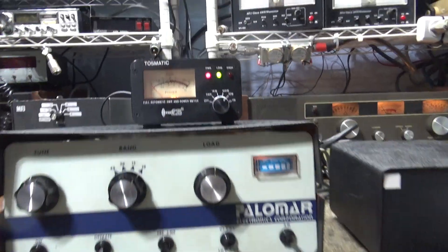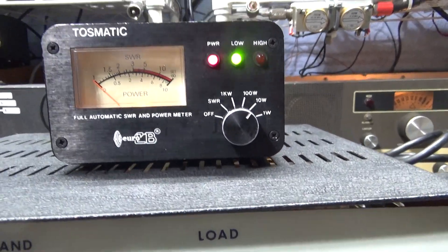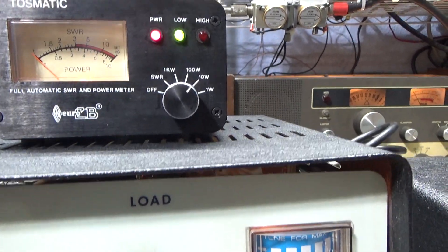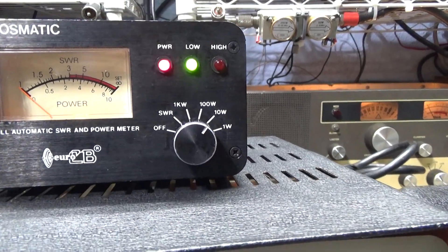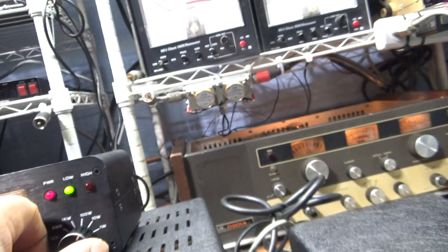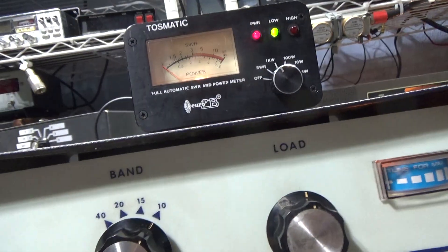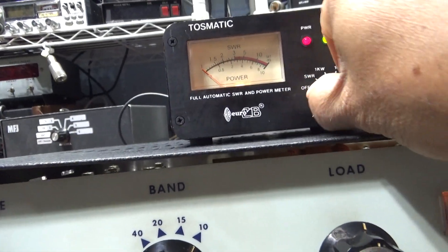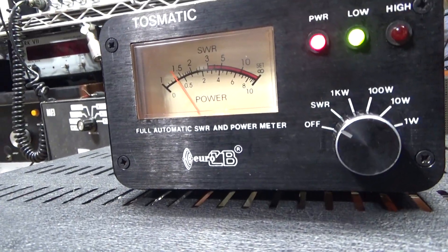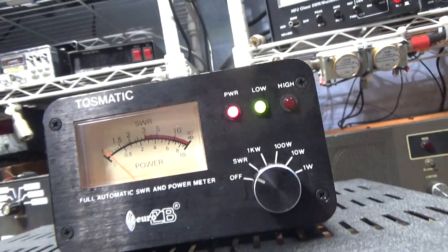Alright, doing a quick one. This one is basically showing this Tosmatic watt meter. Had a guy asking, do I got a thousand watt watt meter? Yeah, it's not a high-end watt meter, but one thing I do like about this watt meter is automatic SWR. You don't have to calibrate it. If you want to read SWR, you just click it to the SWR scale and key it down and it reads SWR. Keying it down, I got about a 1.3.